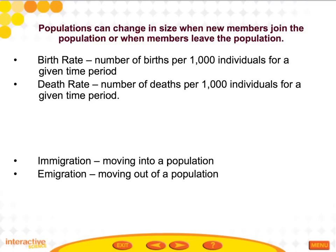The next section is on populations. You'll be able to describe how populations change in size and what factors limit population growth. Populations is the second level of ecological organization and includes all of one species living in a particular area. Populations can change in size when new members join or when members leave.